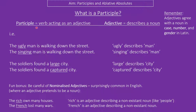First of all, what is a participle? A participle is a verb that acts like an adjective, and adjectives describe nouns. So, 'the ugly man is walking down the street' — ugly is an adjective describing man. 'The singing man walks down the street' — despite the fact that sing is normally a verb, here it describes a noun, so it is an adjective. The soldiers found a large city; the soldiers found a captured city — both describe a city.